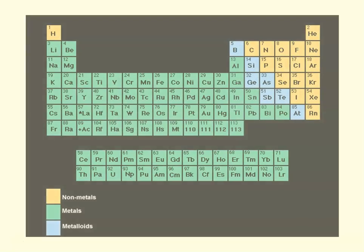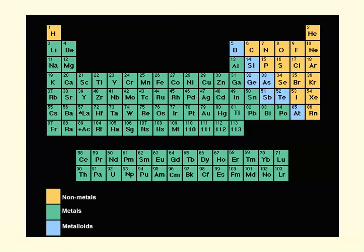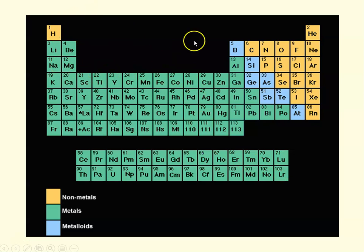This periodic table shows you the metals, which are everything in green, the nonmetals, which are orange, and the metalloids shown in blue. And here's another detailed periodic table with lots of information.